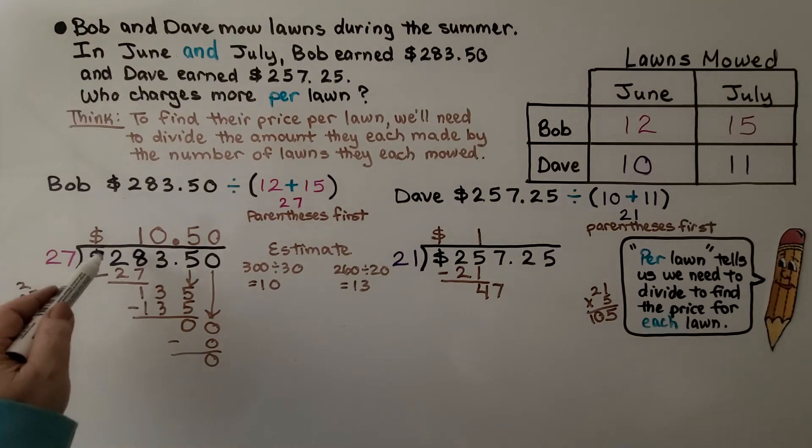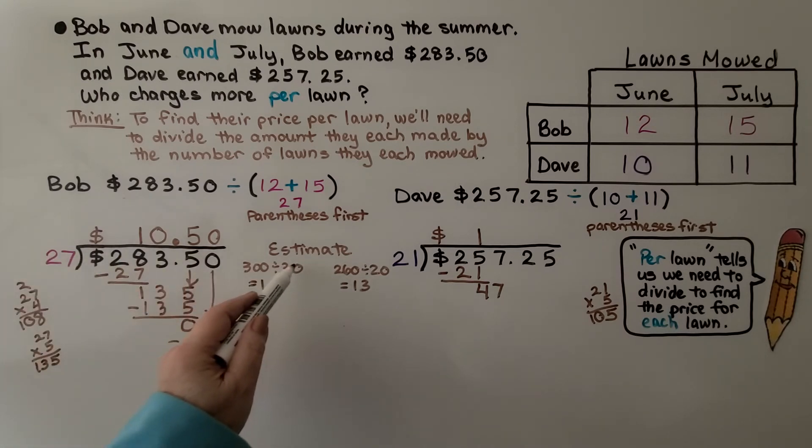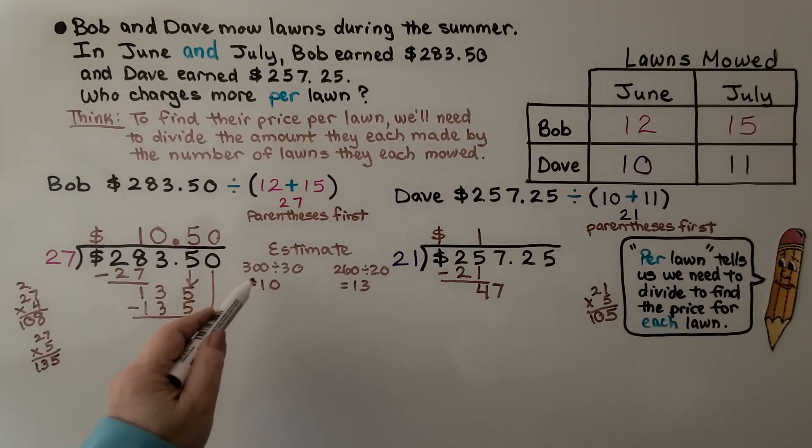We could have estimated 283 is close to 300, and 27 is close to 30, and 300 divided by 30 is 10. So we would know that Bob charged about $10. That's our estimate.